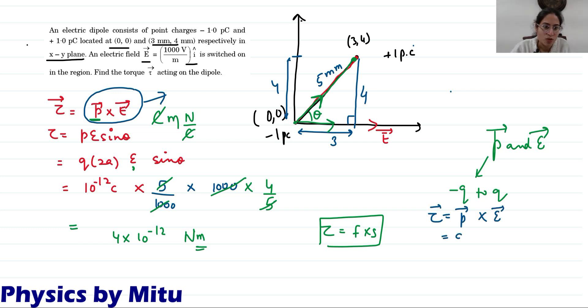Torque is P cross E. P is Q into 2A vector cross E vector. What is 2A vector? It is 3i plus 4j. Cross E vector - we're writing just direction units not magnitude. I cross I is 0 and j cross i is minus k. Your direction is minus k.